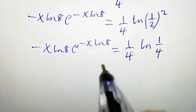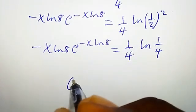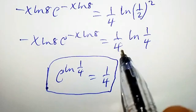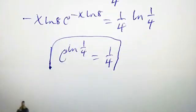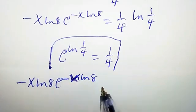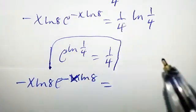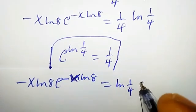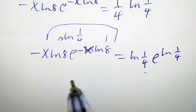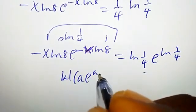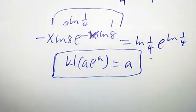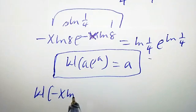Recall that we can write 1 over 4 as e to the power of ln 1 over 4. Take note of this. That means we are going to replace this 1 over 4 with that. So from this line we are going to have minus x ln 8 times e to the power of negative x ln 8 equal to ln 1 over 4 times e to the power of ln 1 over 4. At this stage, let us recall the Lambert W function formula: w of a times e to the power of a is equal to a. Taking Lambert W function of both sides, we are going to have w of negative x ln 8 times e to the power of negative x ln 8 equal to w of ln 1 over 4 times e to the power of ln 1 over 4.